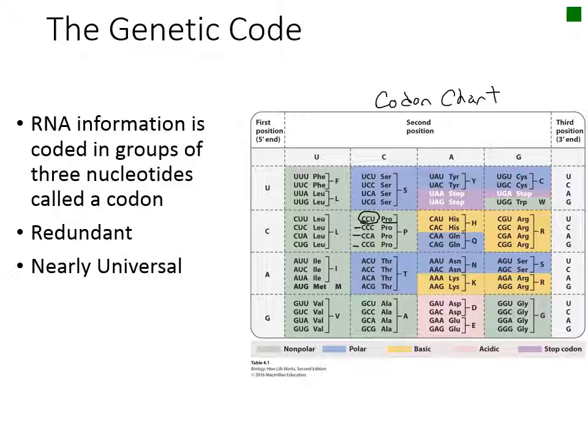The genetic code is also nearly universal, which means that this codon chart can be used to read a human gene, a cat gene, and a bacterial gene, all using the same code.